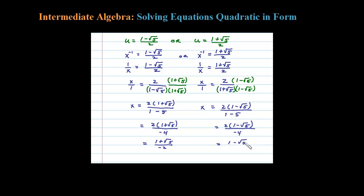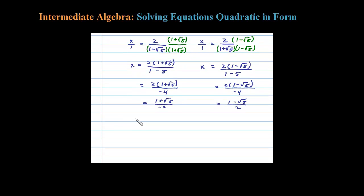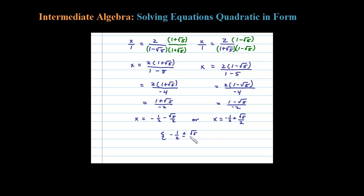Cleaning this up, x equals negative 1 plus √5 over 2, or negative 1 minus √5 over 2. In set notation, the two solutions are x equals negative 1 plus or minus the square root of 5, all over 2. Those are the two solutions to the original equation using u-substitution.